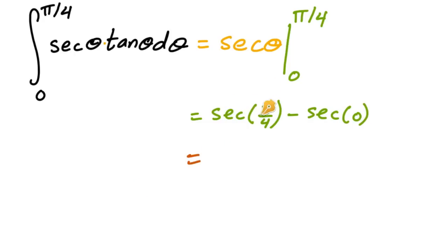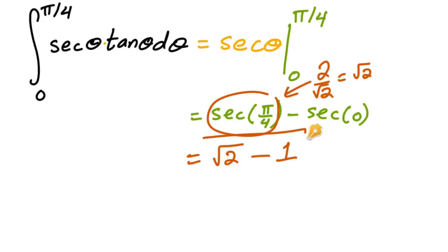And so secant of π over 4, well this is just 1 over cosine. So this is going to be, since cosine of π over 4 is root 2 over 2, this is going to be 2 over square root of 2, which also reduces to just square root of 2. So I'm just going to write square root of 2. And then minus secant of 0, that's equal to just 1 because cosine of 0 is 1. And so that's how easy it was. That's it.